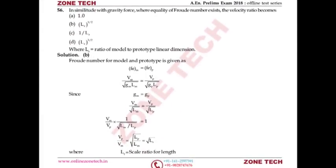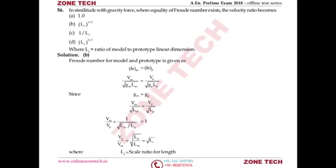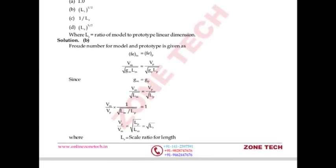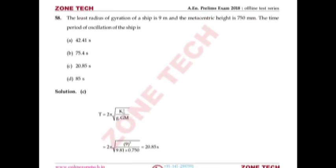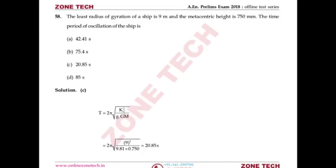Question number 56: In similitude with gravity force where equality of Froude number exists, find the velocity ratio. Froude number = V/√(gL). Setting Fr_model = Fr_prototype: V_M/√(g_M·L_M) = V_P/√(g_P·L_P). Since g_M = g_P, velocity ratio V_R = √(L_P/L_M) = √(L_r). Answer is B.